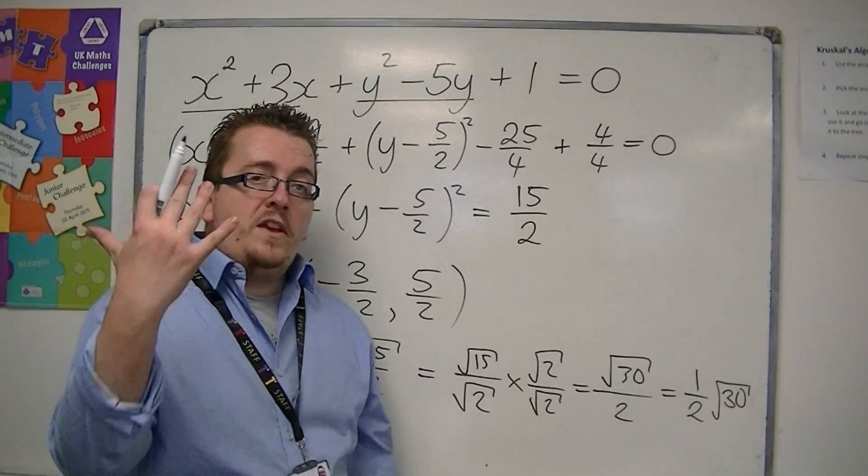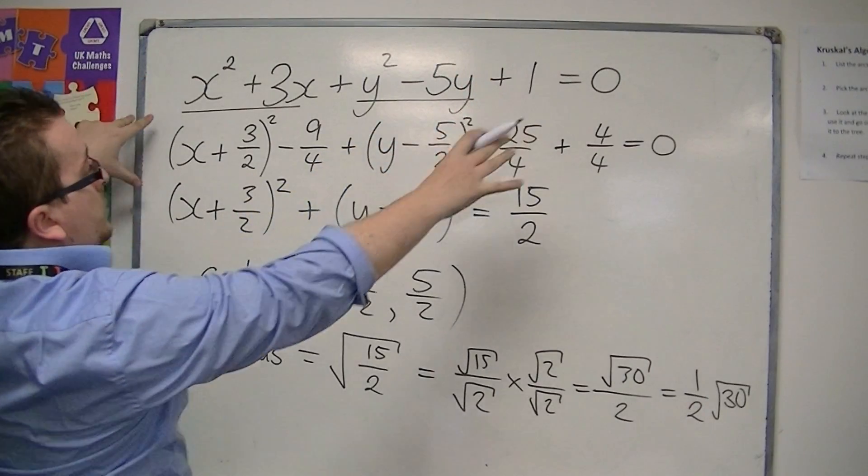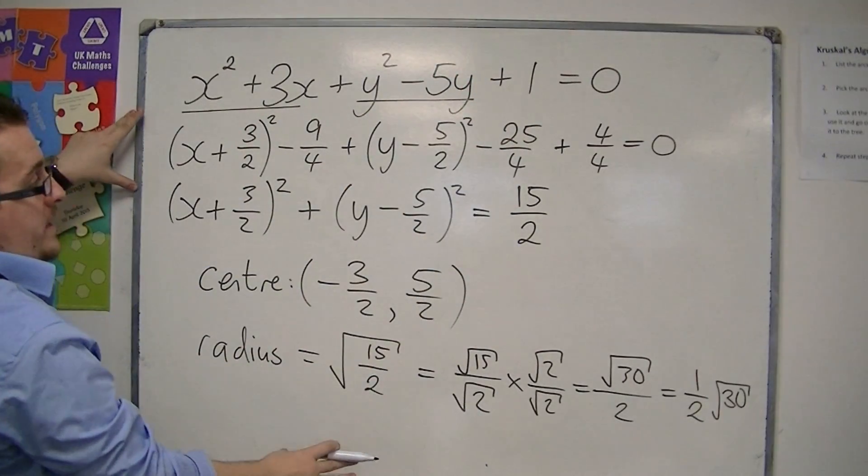So this is how you can go from an equation of a circle to finding the centre and radius.